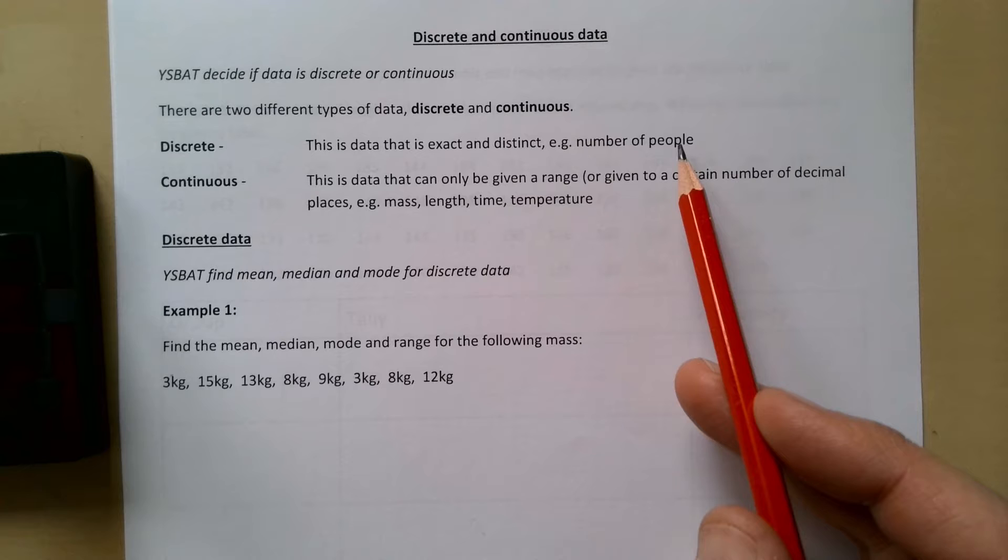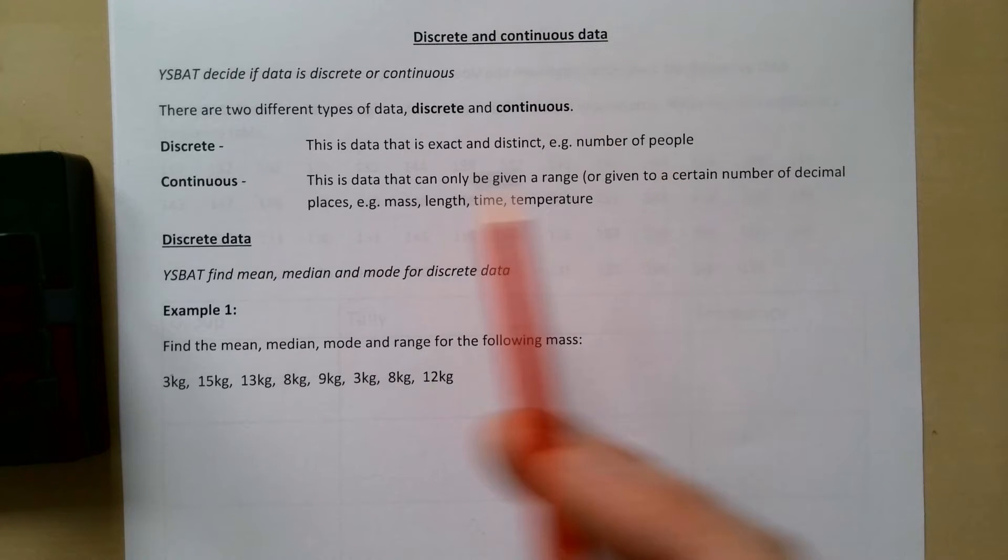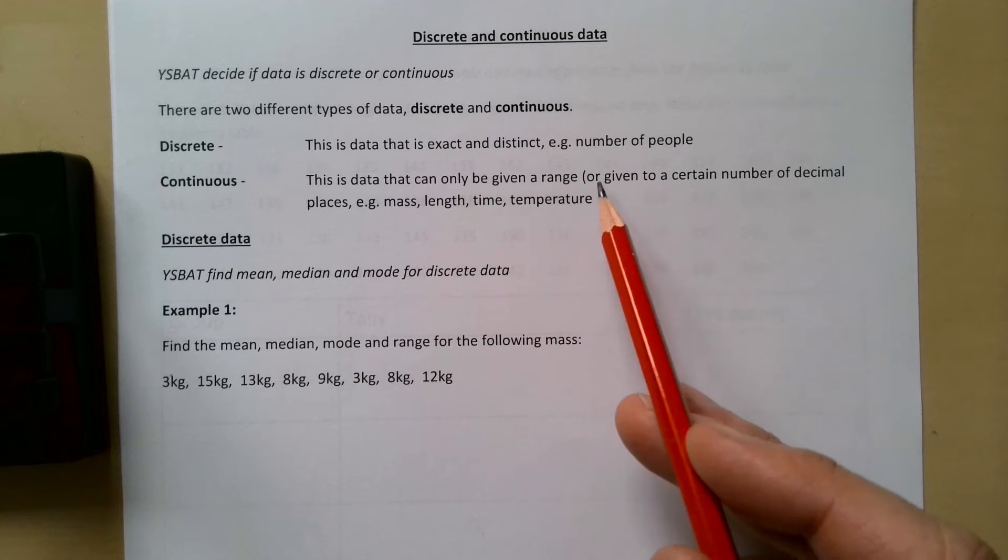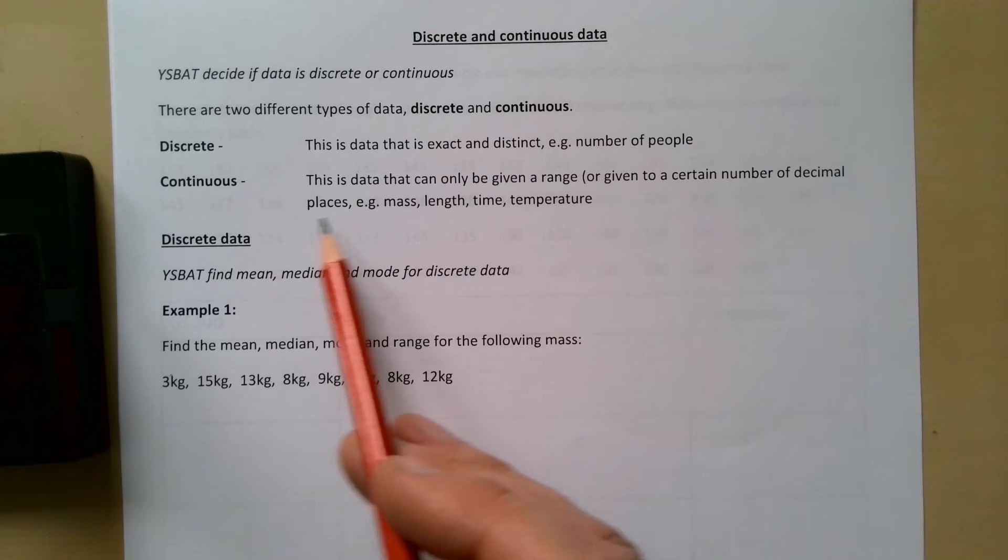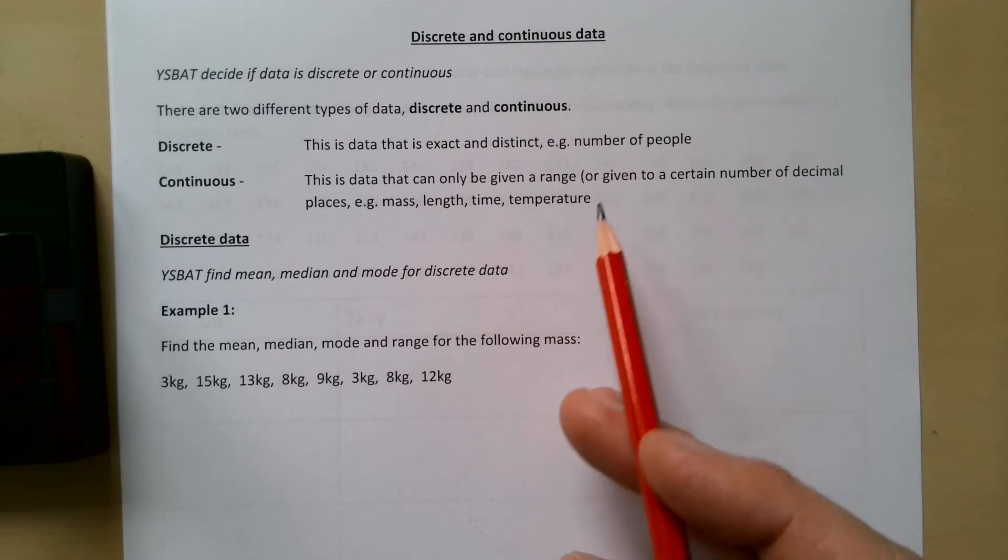The number of coins in your pockets and shoe sizes is discrete. Continuous - this is data that can only be given in a range or given to a certain number of decimal places, like mass, length, time, and temperature.